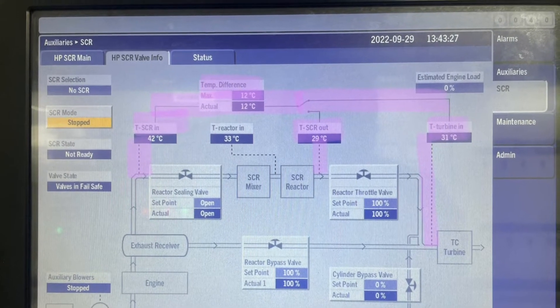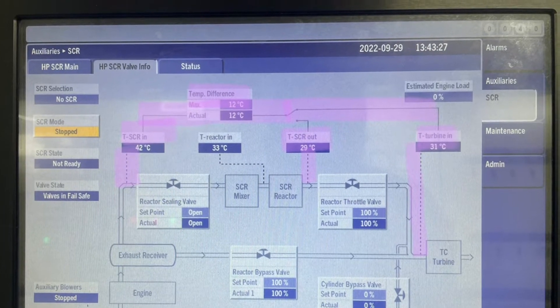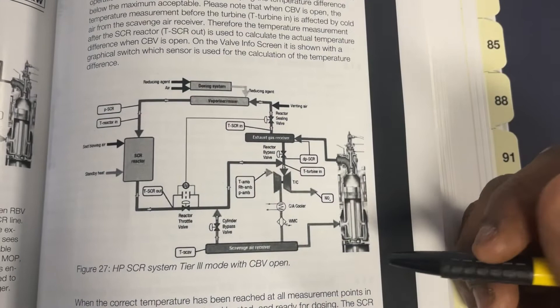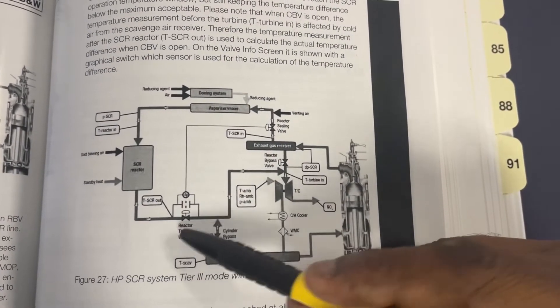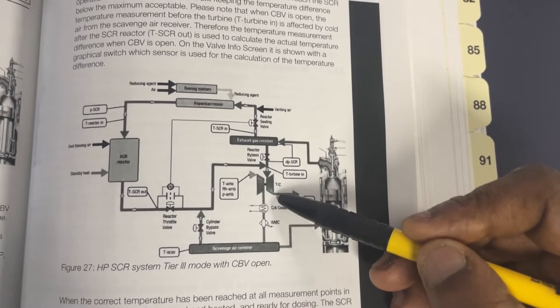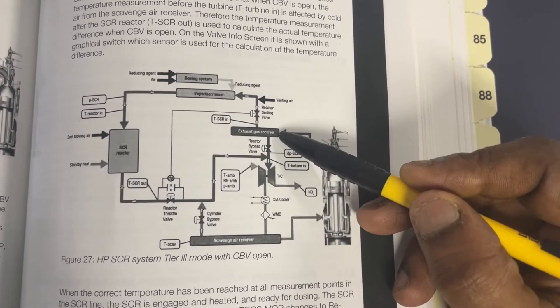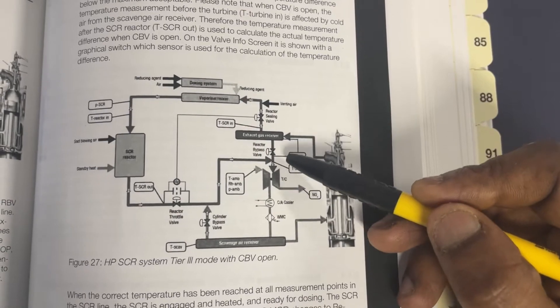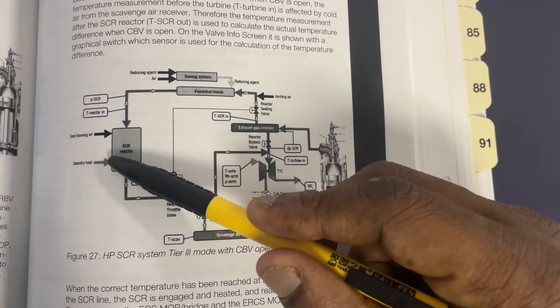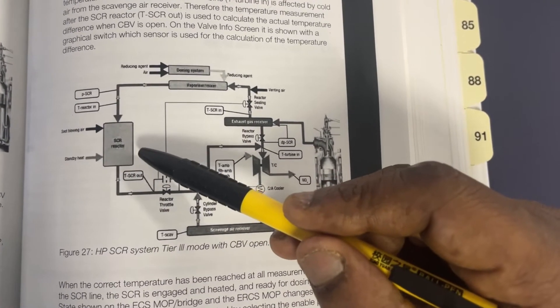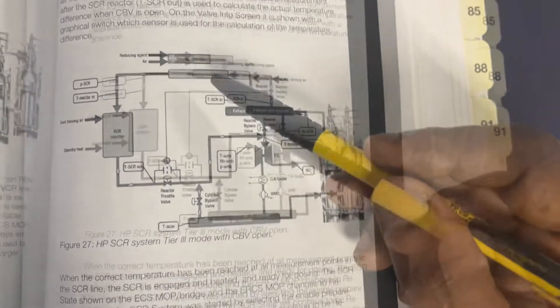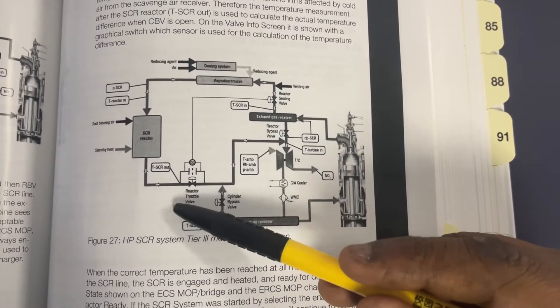When RTV fully opens, the RBV will close gradually. So engineers, to summarize, the RTV and RBV ensure that the turbocharger is getting enough energy from the exhaust gas receiver, and at the same time there is slow and gradual buildup of temperature in the SCR reactor to enable the dosing system.